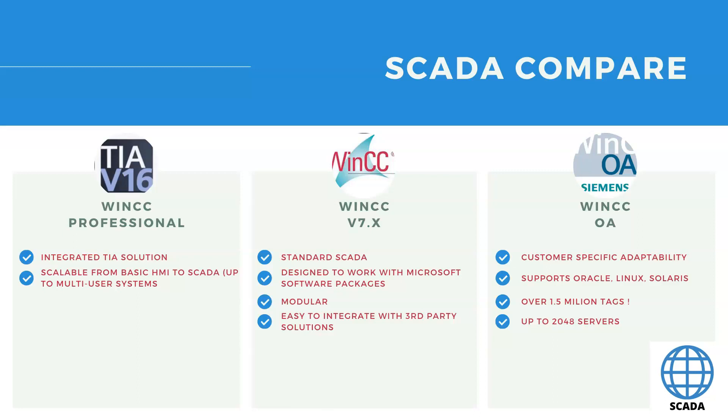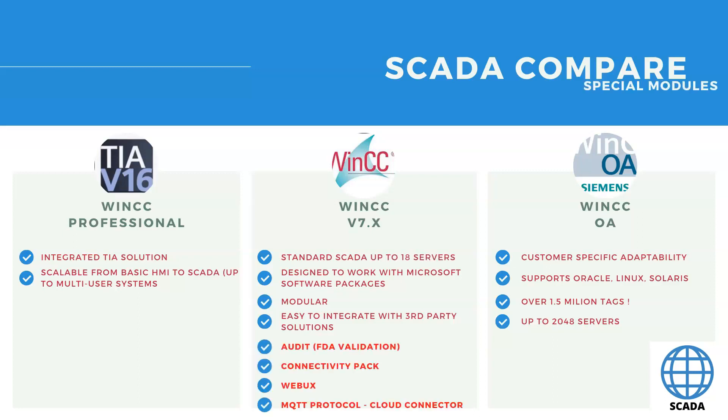WinCC OA is the biggest and most powerful system from Siemens. It has customer-specific adaptability and can work with Oracle, Linux, and Solaris — a different kind of solution. This system can work with over 1.5 million tags, which is a huge number — the biggest system I personally built had 40,000 tags. WinCC OA can work with up to 2,048 servers, so if you need a large system for a whole country — for example for gas or water infrastructure — you need WinCC OA.